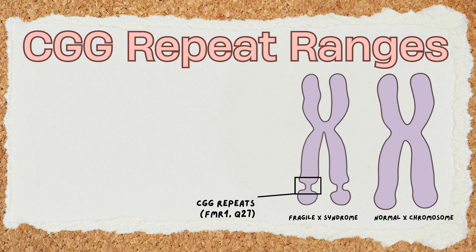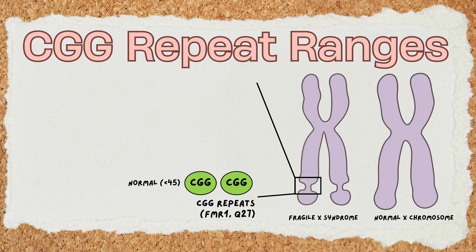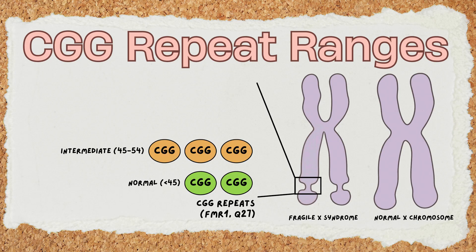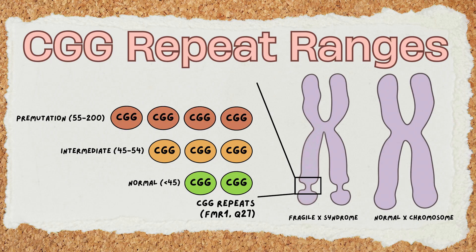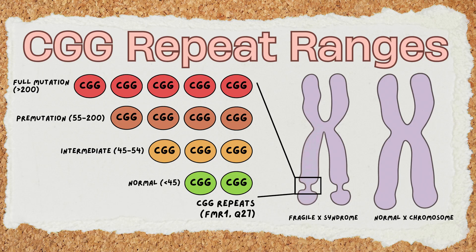Here's how the different repeat ranges affect a person. First, the normal range is 5 to 44 repeats — the gene functions correctly and produces the necessary protein. Next, the intermediate range is 45 to 54 repeats, a gray zone that does not cause Fragile X but carries a slightly higher risk of expansion in future generations. The pre-mutation range is 55 to 200 repeats; these individuals do not have Fragile X syndrome, but the expanded repeat can cause other associated health problems. Lastly, the full mutation range is more than 200 repeats — this large expansion causes the gene to shut down completely, preventing it from producing the FMR1 protein, which is essential for brain development.